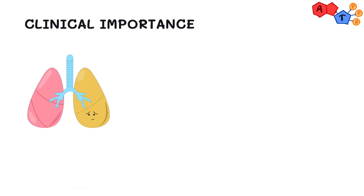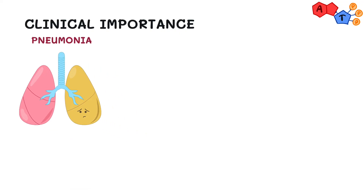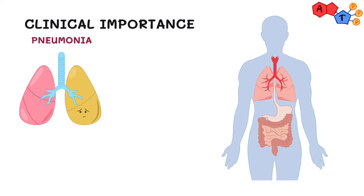Pneumonia is one of the most common presentations in patients infected with Klebsiella. Patients tend to develop aspiration pneumonia via aspiration of GI content, which leads to lobar pneumonia that usually presents as a cavitary lesion on the lung — this might be confused with secondary TB.